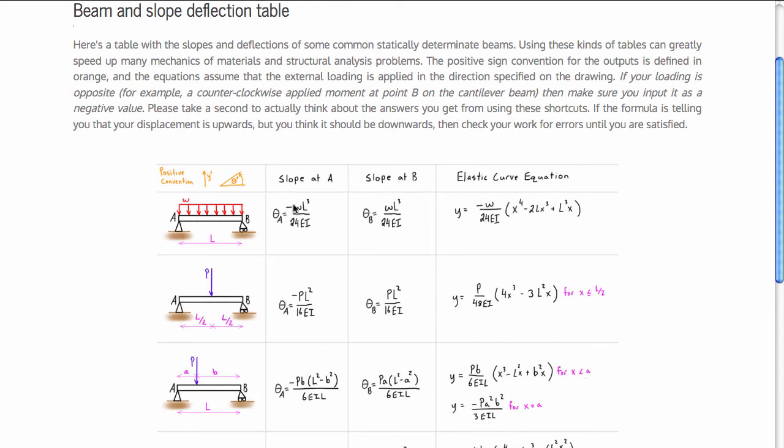Now I do caution you guys to be super careful when you are using these that you're putting in everything correctly. For example, when you get out values from these tables, if your y value is positive, that's indicating a deflection in the upward direction. If your y value is negative, that's indicating a deflection in the downward direction. And again for angles here, if you're getting a positive angle, these are in units of radians. If it's positive, that means it's kind of like counterclockwise up from the axis, and then counterclockwise down from the axis would be considered a negative angle.